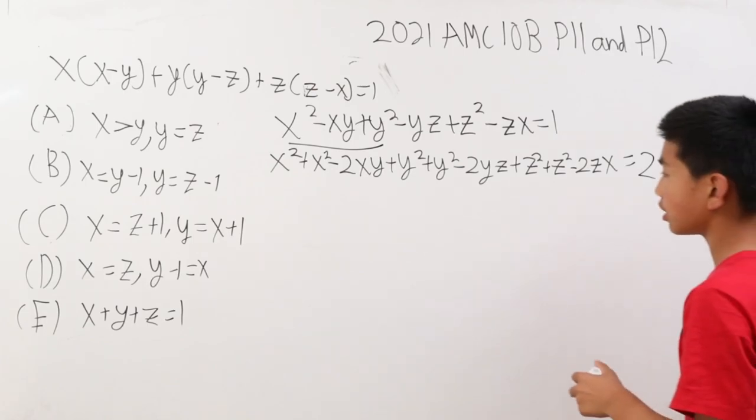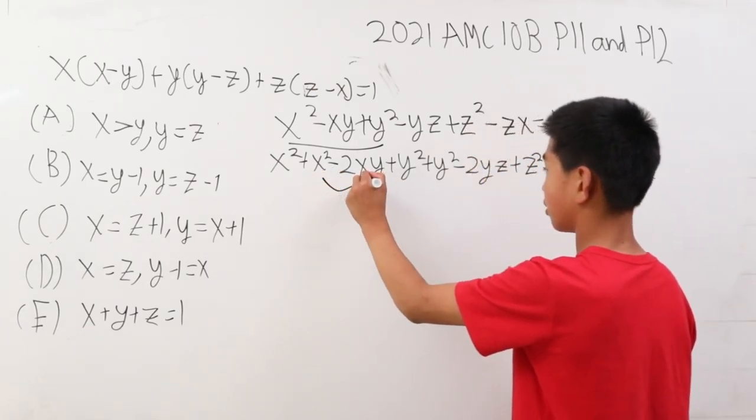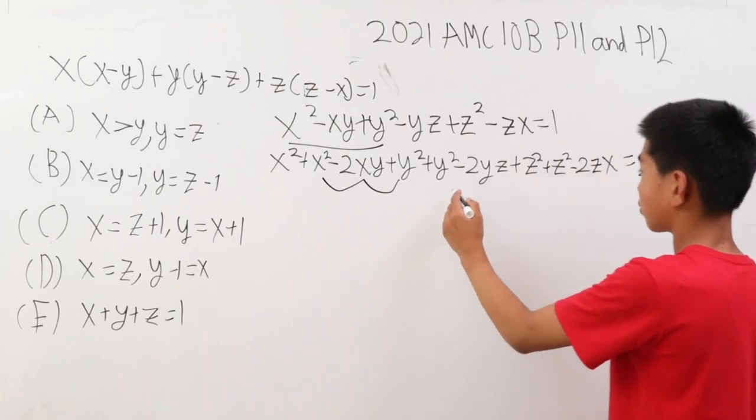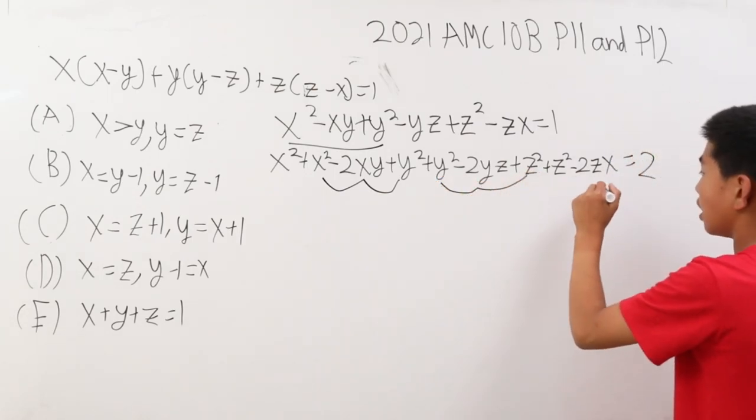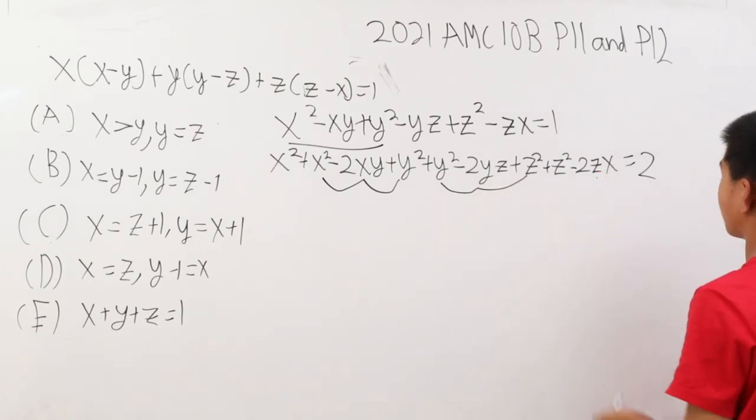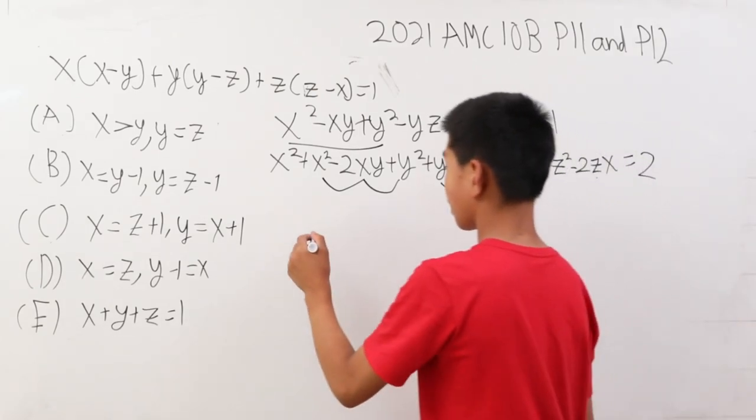Now we notice that we can now complete the square here. x squared minus 2xy plus y squared, and then here y squared minus 2yz plus z squared. And then these last three terms can also complete the square.